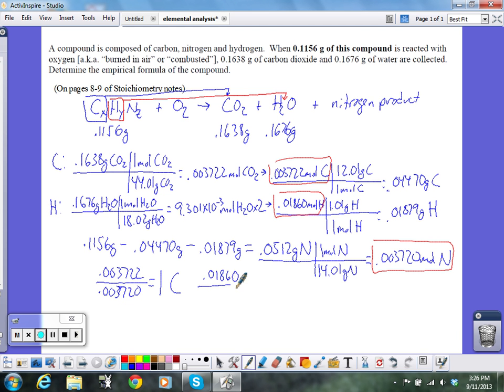0.01860 divided by 0.003720 is equal to just about 2.5. Okay, since that's not really close to a whole number, if it was like 0.9, I could round it. If it was 0.01, I could round it. But 2.5, I can't round that. So right now, I'm stuck with this 2.5 for hydrogen. And then finally, I divide the nitrogen by itself. 0.003720 divided by 0.003720. And that's one nitrogen.